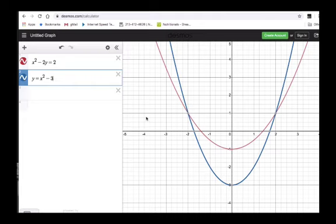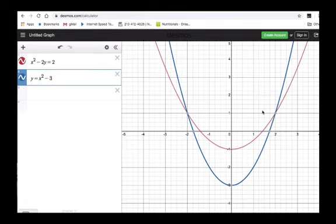When you look at the graph, you can see that sure enough, that's the point (negative 2, 1), that's the point (2, 1), and so our graph is consistent with the solutions that we got when we solved this algebraically. We'll see you next time.